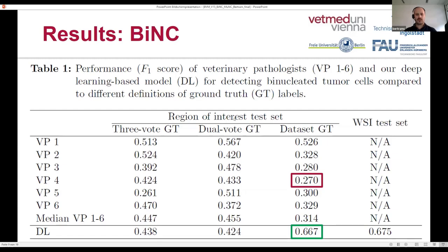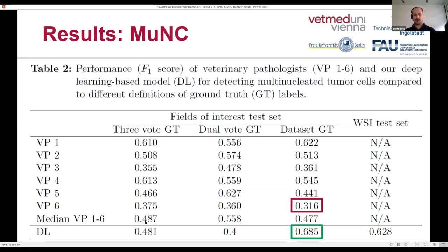When we applied different ground truth definitions based on the majority of the pathologists, there was quite a change in the performance metrics, but the algorithm remained around the median value of the pathologists. A very similar result was observed for multinucleated tumor cells — the algorithm also outperforms all six pathologists when using the dataset ground truth, which was also used for training the model.